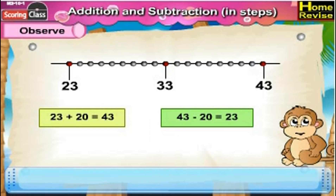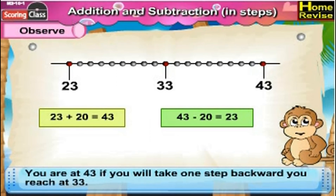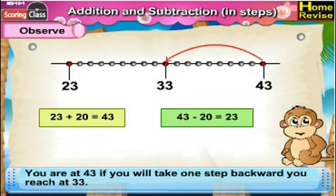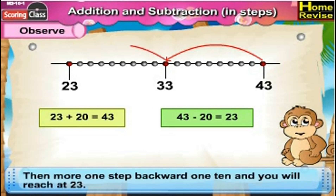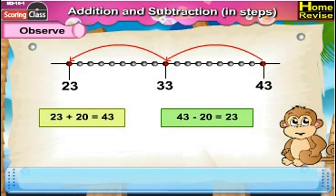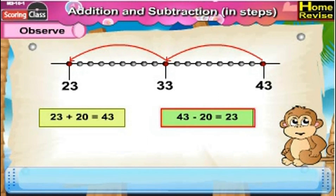Now, 43 minus 20. You are at 43. You will take a step of 10 backward and you will reach 33. Then one more step backward of 10 and you will reach 23. Which means 43 minus 20 is 23.